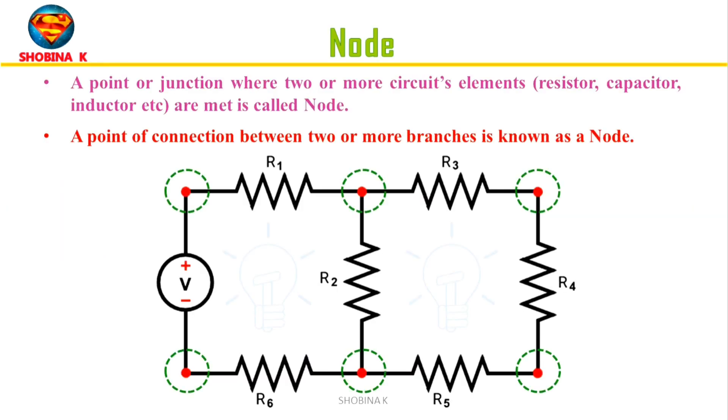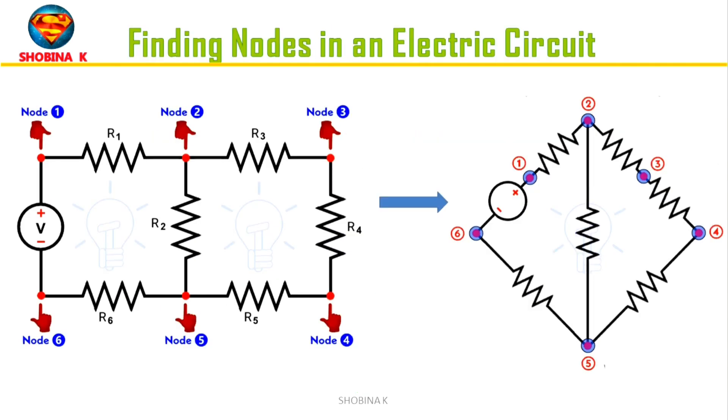In other words, it is a point of connection between two or more branches is known as node. So after redrawing the circuit which is on the left side, it becomes the equivalent circuit which is on the right side.